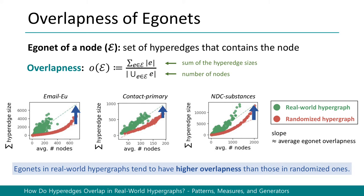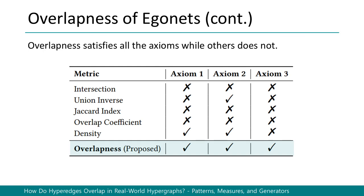Based on the three axioms, we define a new measure called overlapness of a set of hyper-edges. Instead of counting the number of hyper-edges, we divide the sum of the hyper-edge sizes by the number of nodes. We then measure the overlapness of egonets in real-world hypergraphs and those in random hypergraphs. Our observations show that egonets in real-world hypergraphs tend to have higher overlapness than those in randomized ones. The proposed measure, overlapness, satisfies all the axioms, while others do not, including density.